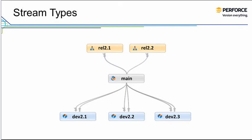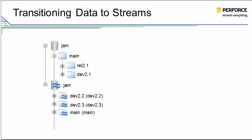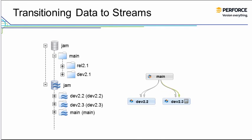To illustrate some of these concepts, let's look at a common codeline model called the mainline model, as it would appear using streams. The general strategy involves copying the non-stream mainline to a stream mainline, performing your active development in the stream mainline or in related child streams, and merging bug fixes and post-release changes from the non-stream mainline to the stream mainline.